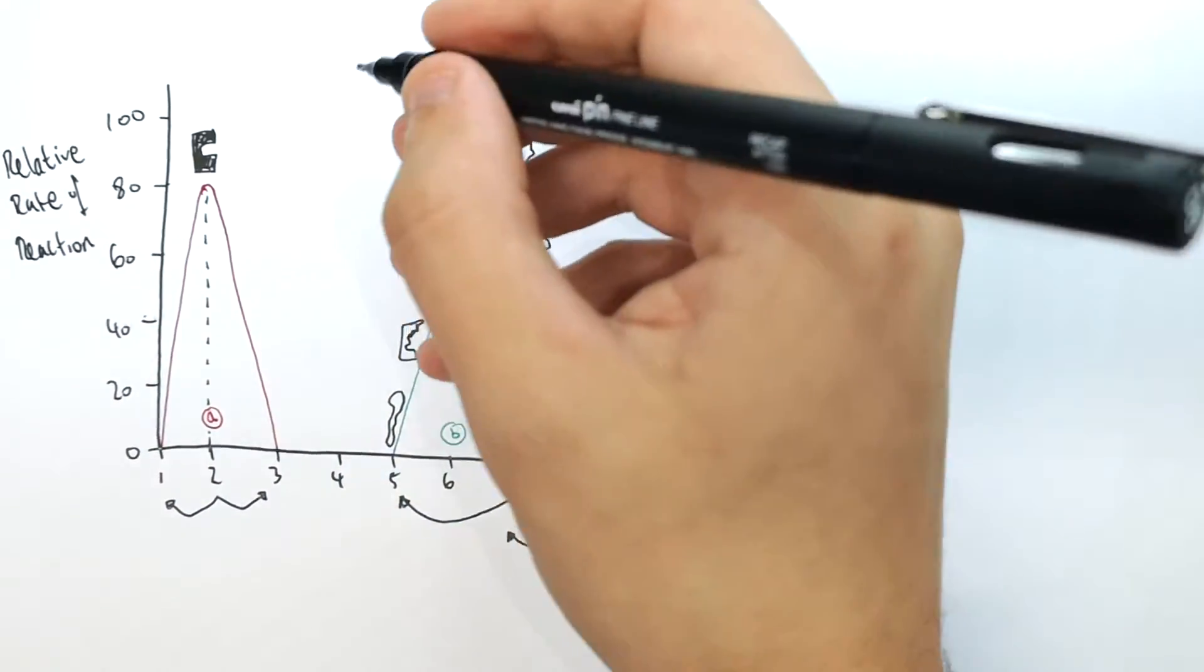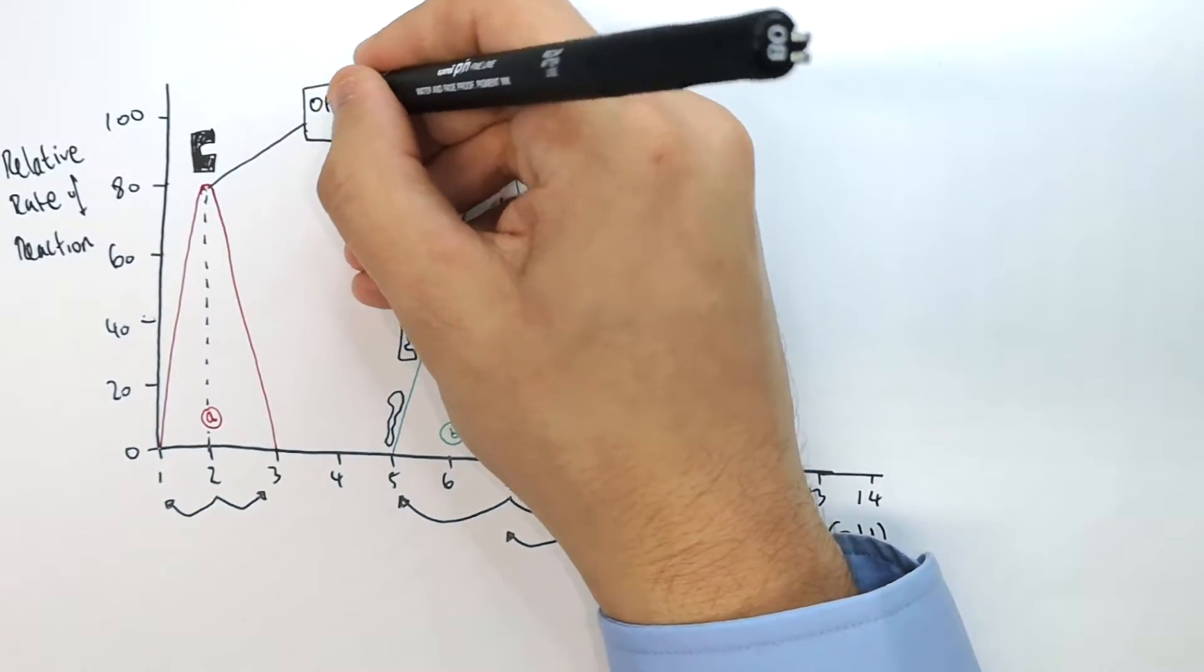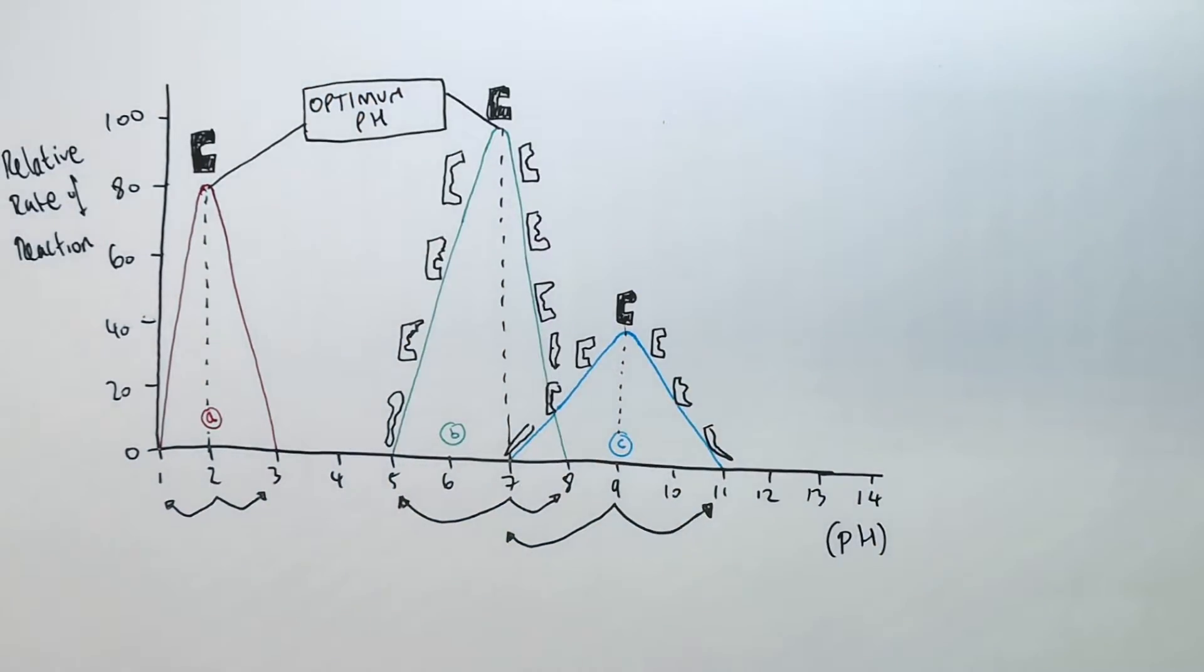So remember, it's all about above and below the optimum pH and it's about denaturing.